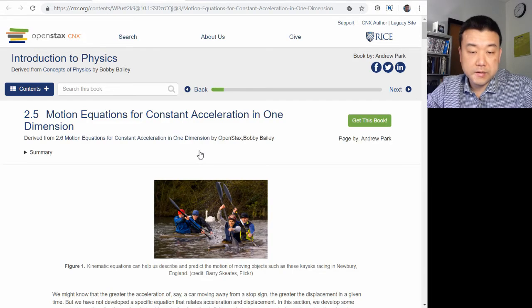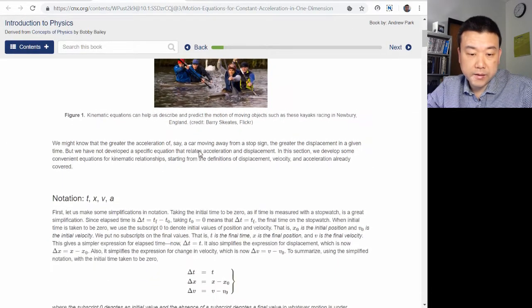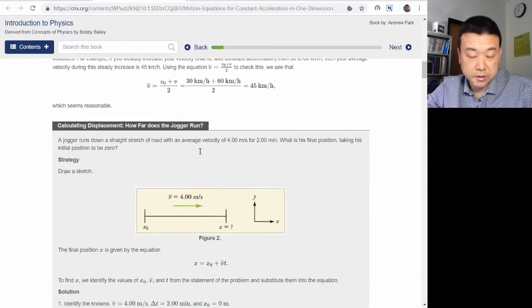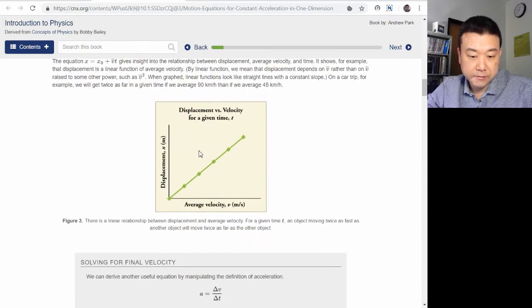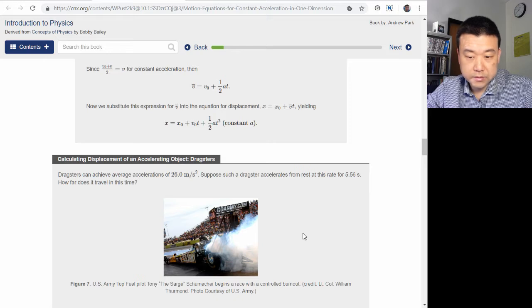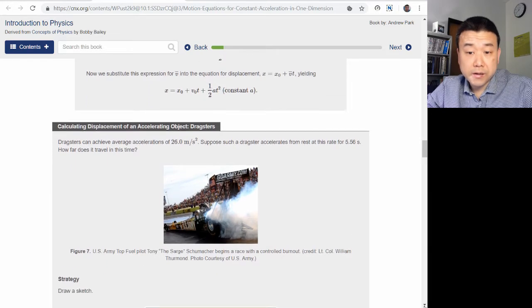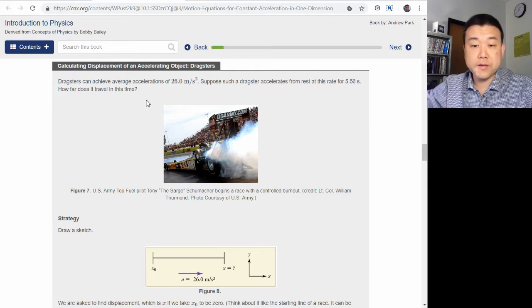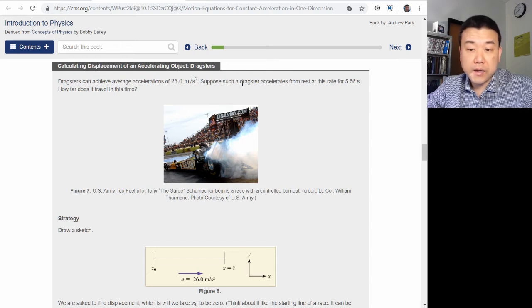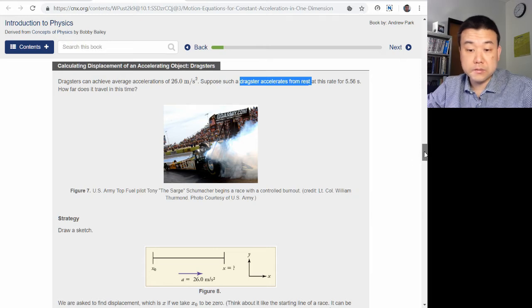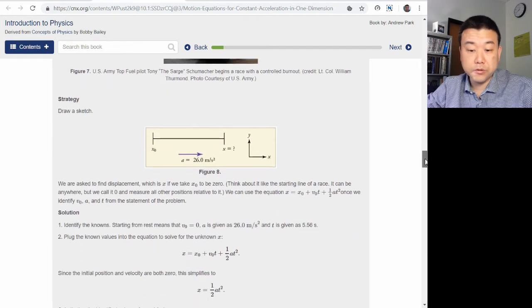So in the hint, it said that the example calculating distance traveled under constant acceleration dragsters would be the example that's relevant. And if you look at it, here it is, dragsters. It is mathematically very analogous. And what that means is both the motion of an object being dropped from rest and the motion of this car accelerating from rest are mathematically very similar.